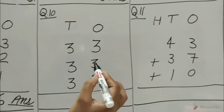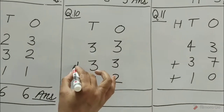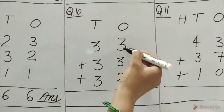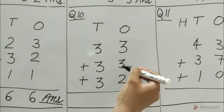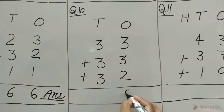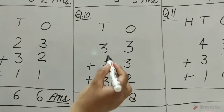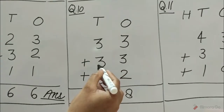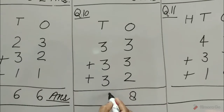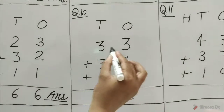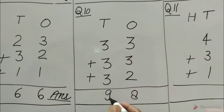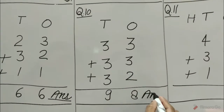Question number 10: 33 plus 33 plus 32. 3 plus 3 is equal to 6, 6 plus 2 is equal to 8. Now add tens: 3 plus 3 is equal to 6, 6 plus 3 is equal to 9. So, 33 plus 33 plus 32 is equal to 98.